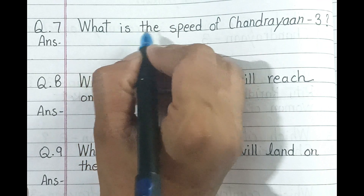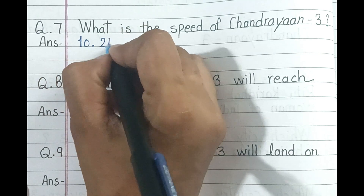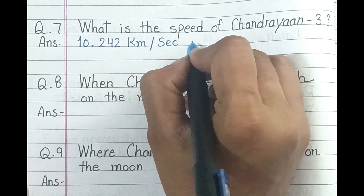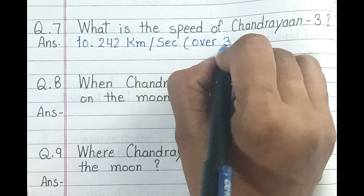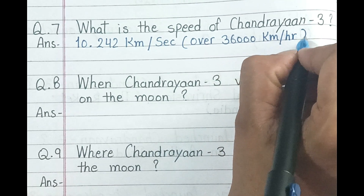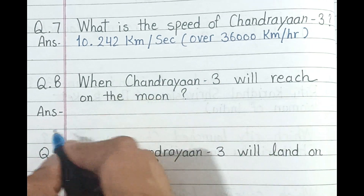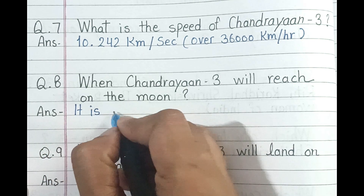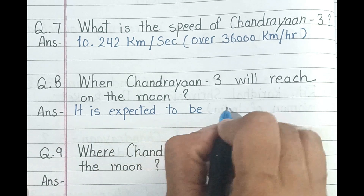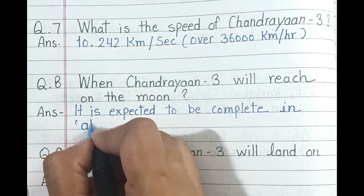Question number 7. What is the speed of Chandrayaan 3? And the answer is 10.242 km/s, over 36,000 km/h. Question number 8. When will Chandrayaan 3 reach the moon? And the answer is it is expected to be complete in about a month.